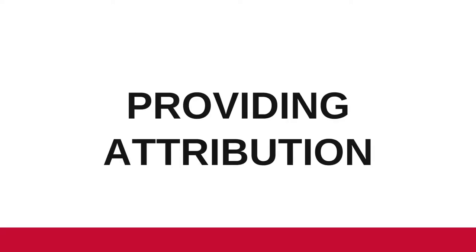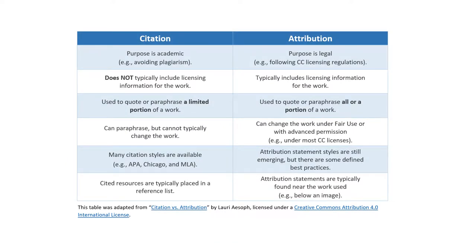Whenever you use a Creative Commons licensed work, or if you get permission to use a traditionally copyrighted work, you usually need to provide attribution. This process is similar to, but not exactly the same as, providing a citation for a work you quote in a paper. Attribution and citation are both forms of giving credit to the creator of a work, but the requirements and why they're required are a little different. For example, you're not legally required to cite a quotation you put in a paper, but you are legally required to provide attribution for copyrighted content that you share or adapt.